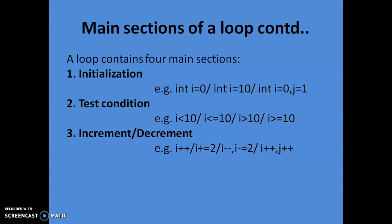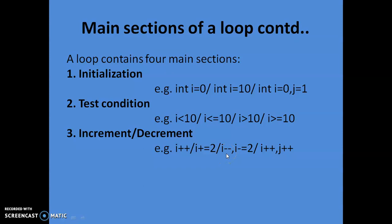We increase the value of i using the increment operator, that is i++. If we want, we can increase the value of i by 2, or by 3, and so on. We can also decrement the value by writing i-- or decrement by 2 using i -= 2. We can increment multiple variables as well — say i and j — and increment or decrement both of them.